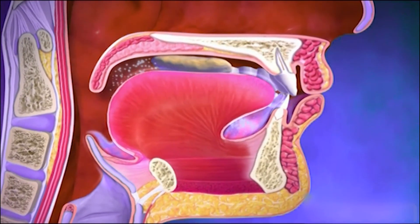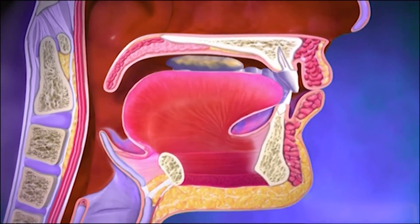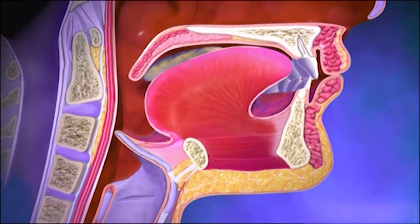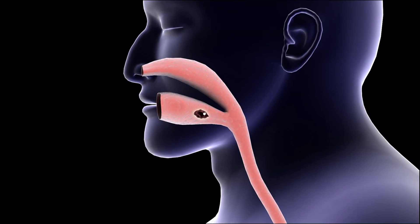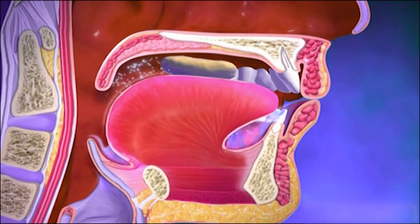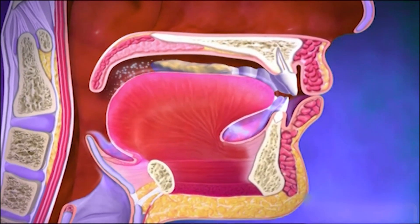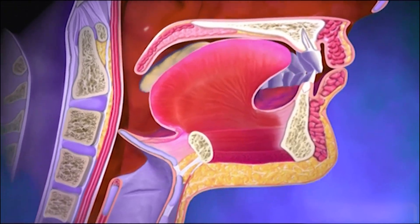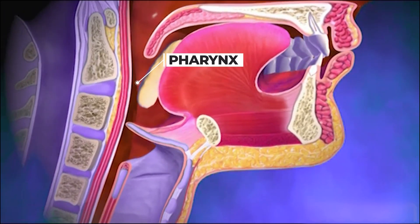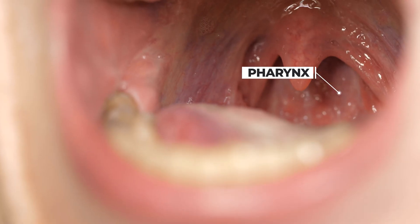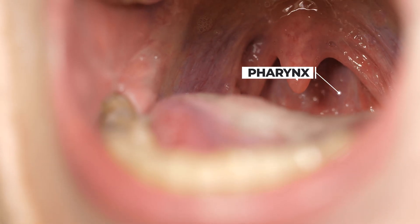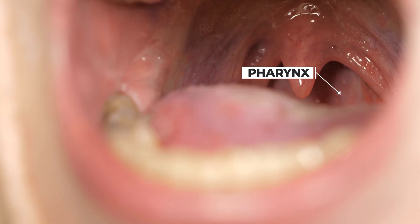After this, our tongue rolls the food into a ball-like shape to make swallowing easier. This ball-like food mass is called a bolus. When we swallow the bolus, it moves to the pharynx, which is located at the back of the mouth. The pharynx is a hollow region that connects the mouth and nose to the esophagus and larynx.